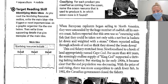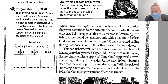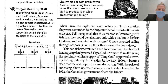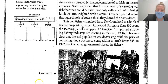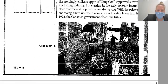But starting in the early 1900s, it became clear that the cod population was decreasing. With the price of cod rising, there was more competition to catch fewer fish. In 1992, the Canadian government closed the fishery.